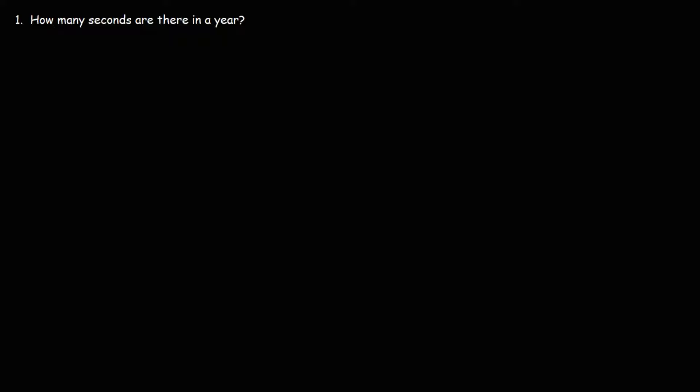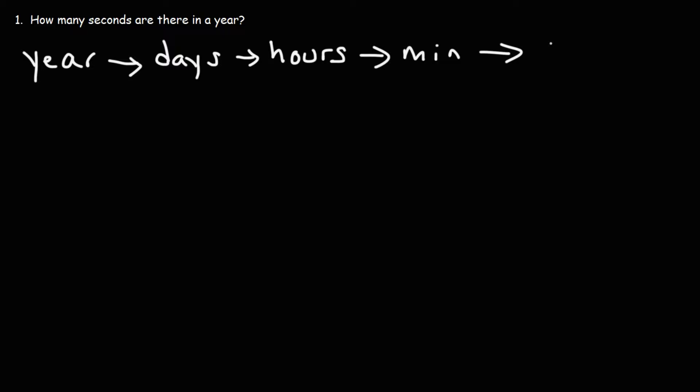In this lesson, we're going to work on some dimensional analysis problems. Let's begin with this one: how many seconds are there in a year? What we're going to do is convert from years to days, then days to hours, hours to minutes, and minutes to seconds. So let's start with what we're given — we're given one year, and we want to convert that into seconds.